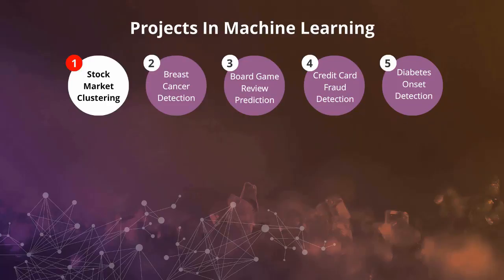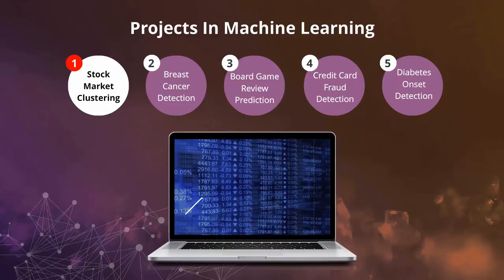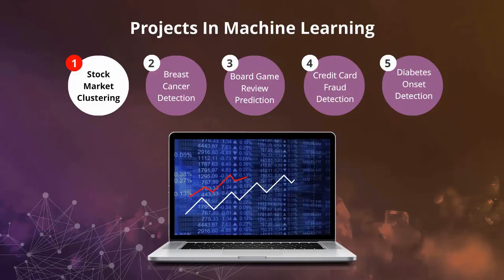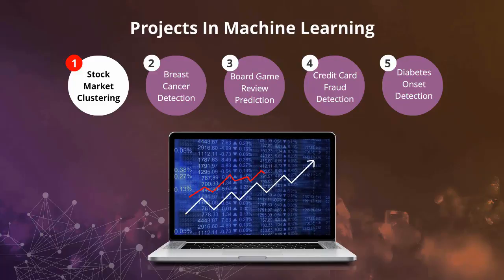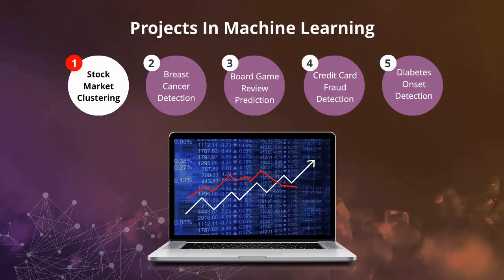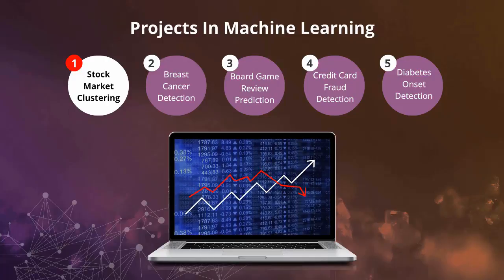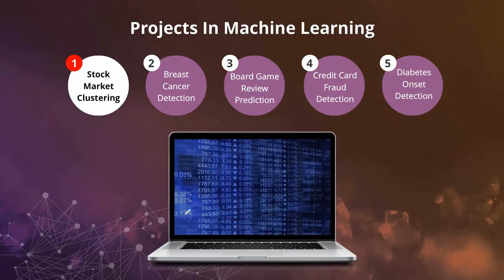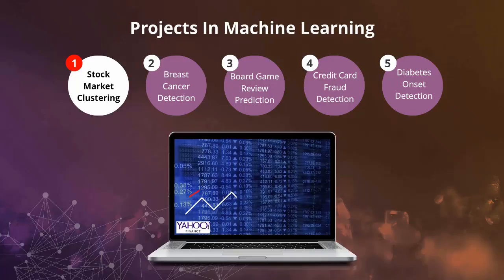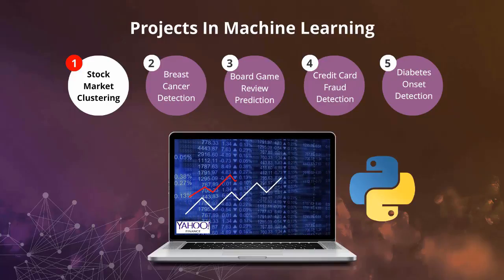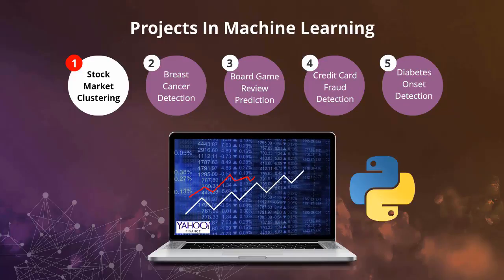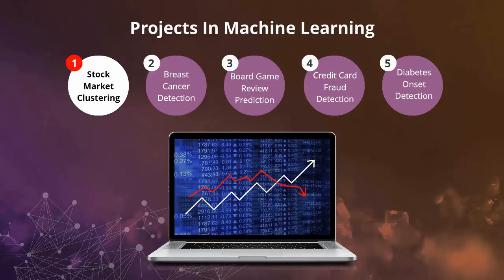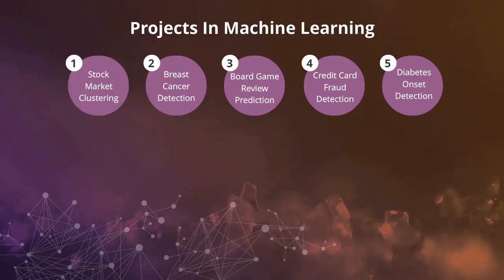The first project is going to be a stock market clustering project where we are going to use a k-means clustering algorithm to identify related companies by finding correlations among stock market movements over a given time span. This project will use open source data from the Yahoo Finance Python module. We're also going to do a PCA dimensionality reduction to plot the data on a 2D plot.